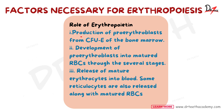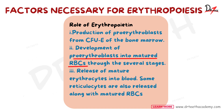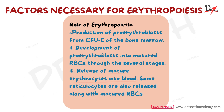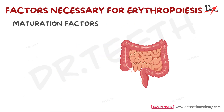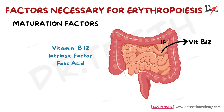Erythropoietin promotes the production of pro-erythroblasts from the colony forming unit erythrocytes of the bone marrow. It helps in the development of pro-erythroblasts into mature RBCs through the several stages, and it also releases mature erythrocytes into the blood. Some reticulocytes are also released along with the mature RBCs.